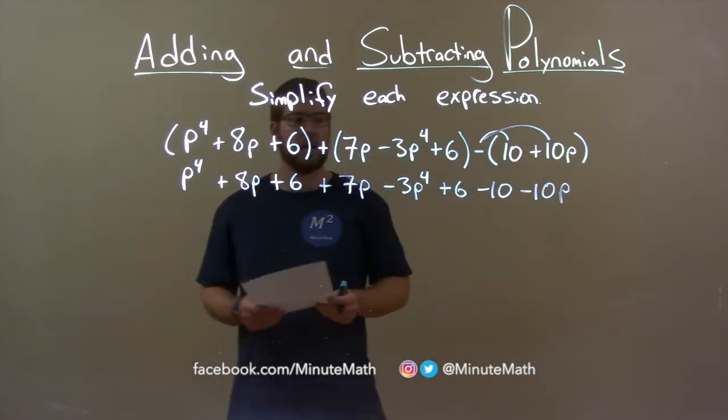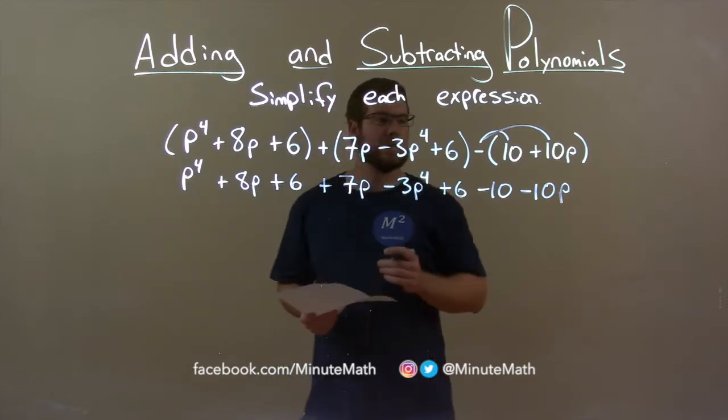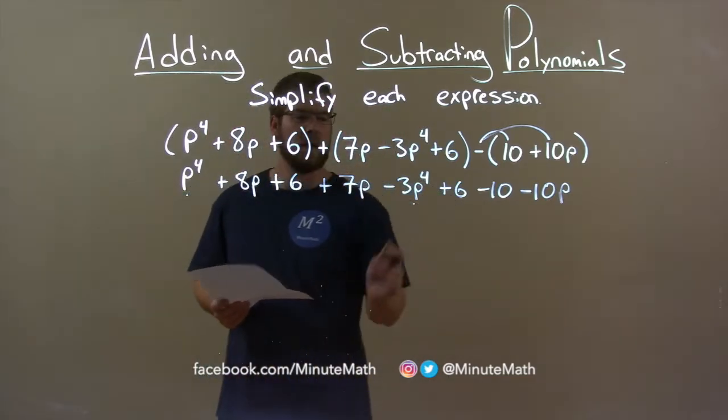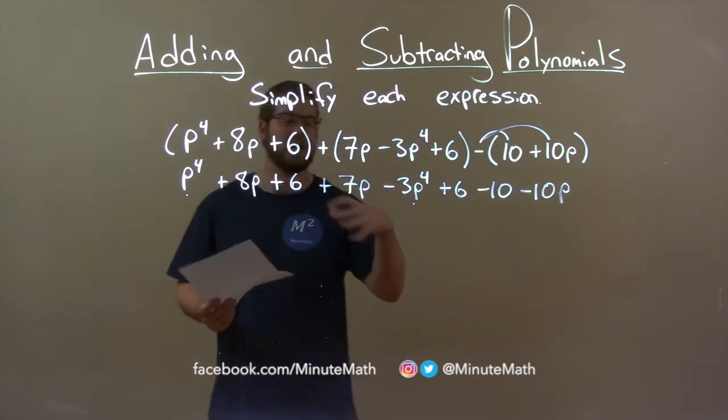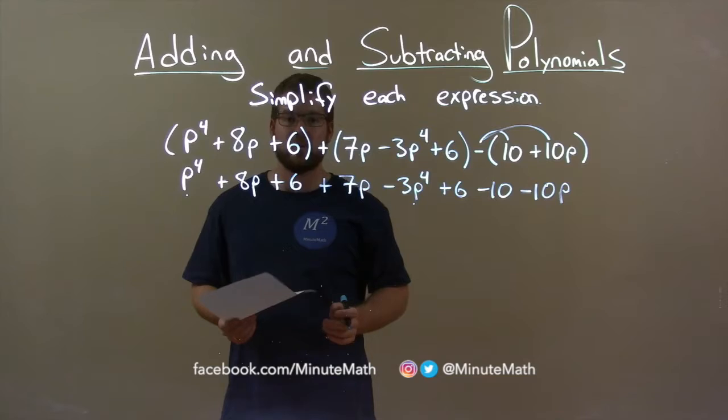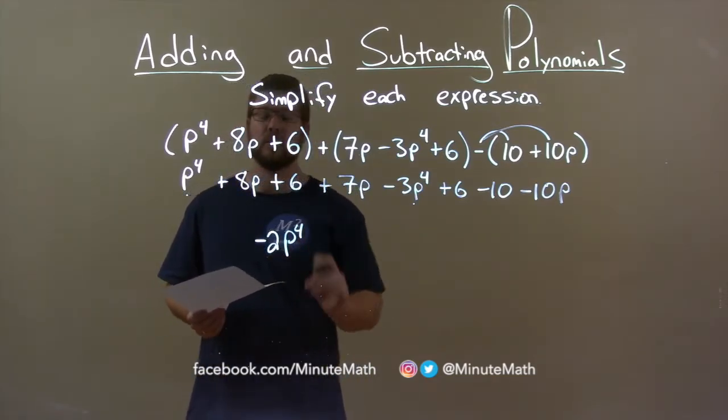Now we want to combine our like terms, starting with our highest degree. Highest degree I see is to the 4th power. I'm going to put a dot under the ones with the 4th power, so when I bring them down, I know I've already covered that term. p to the 4th minus 3p to the 4th is minus 2p to the 4th.